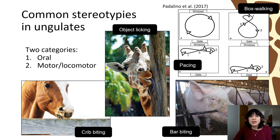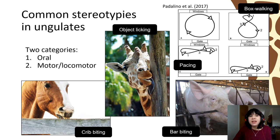We generally organise stereotypic behaviours into two main categories: oral, which are those that involve the mouth, and motor or locomotor, which involve the movement of a body part or of the whole body. In ungulates, it's oral stereotypies that we see most frequently, but whole body or locomotor behaviours do occur in some species. Examples of typical stereotypies in ungulates include object licking, crib biting, bar biting, and locomotor stereotypies such as box walking and pacing.